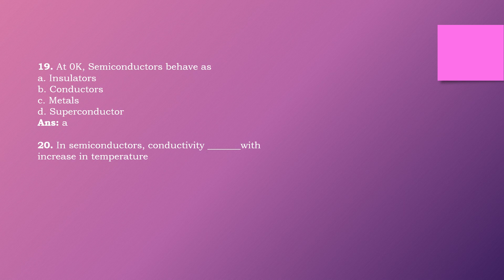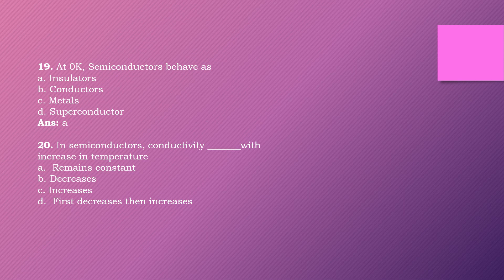Question twenty: In a semiconductor, conductivity dash with increase in temperature. Options are: remains constant, decreases, increases, first decreases then increases. The right answer is option C: increases. In a semiconductor, conductivity increases with increase in temperature.